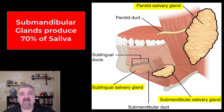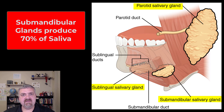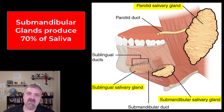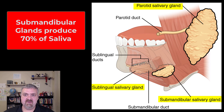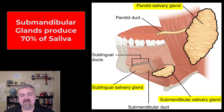The submandibular gland is a mixture of watery serous secretions and mucus. It still produces a lot of salivary amylase, but it's a thicker solution with more mucus in it. The sublingual salivary glands are just mucus glands, so they produce a lot of mucus. Your saliva overall is a combination of this watery serous fluid plus a thicker, cloudy mucus.